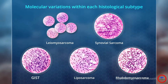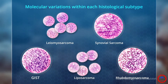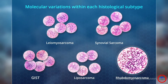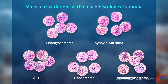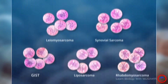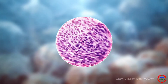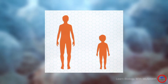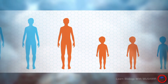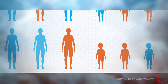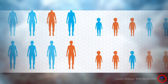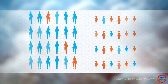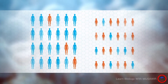Within these subtypes there can be different molecular variations with unique clinical and prognostic characteristics. Soft tissue sarcomas can occur at any age but there is a marked difference in distribution of histological subtypes between adult and pediatric soft tissue sarcomas.